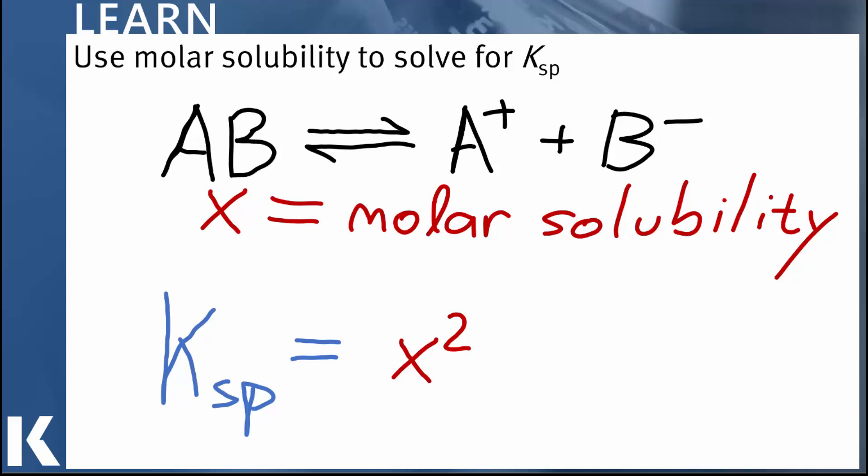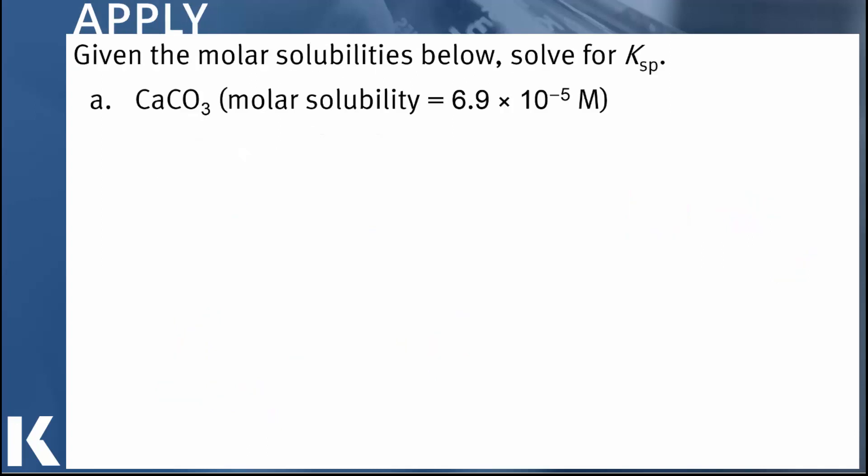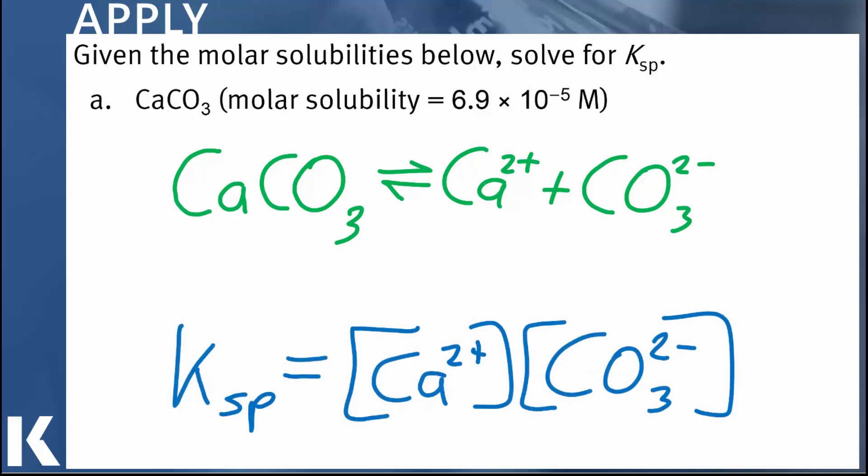Alright, let's take this generic idea and let's look at a specific example. So, here's calcium carbonate, and here we have its molar solubility at 6.9 times 10 to the minus fifth molar. So we'll start by writing our equilibrium expression, there it is, and our Ksp expression.